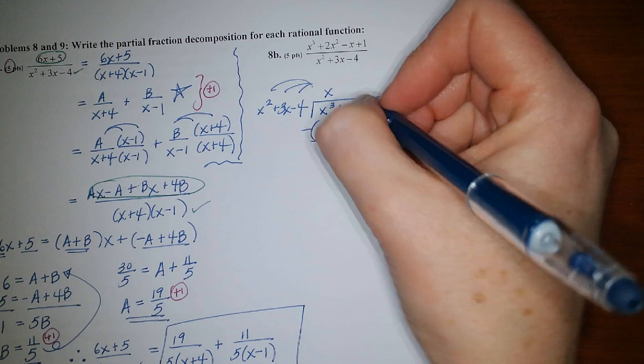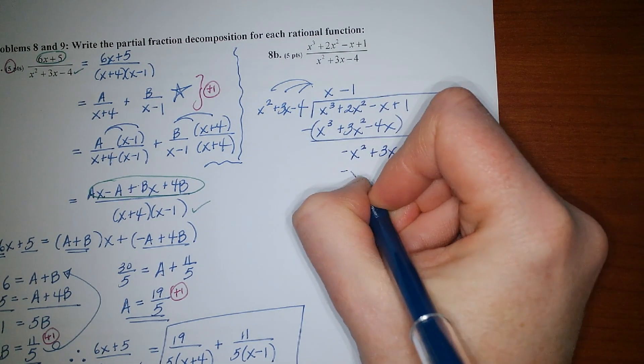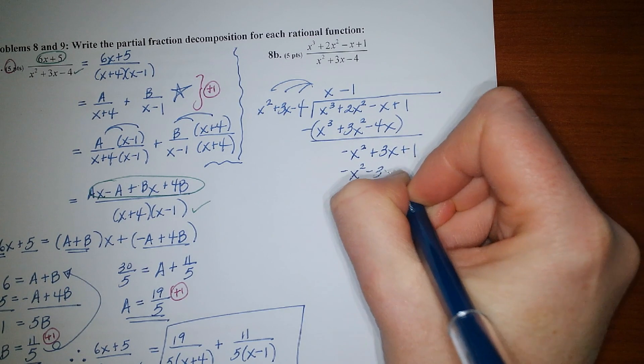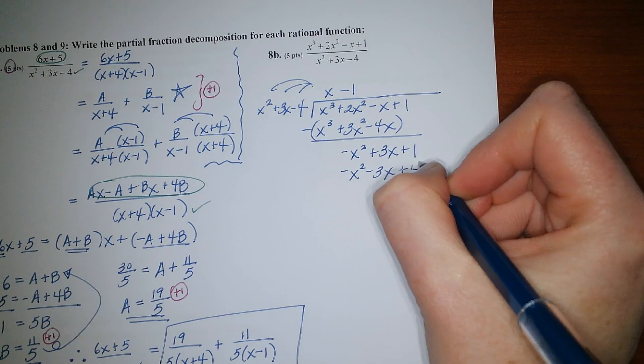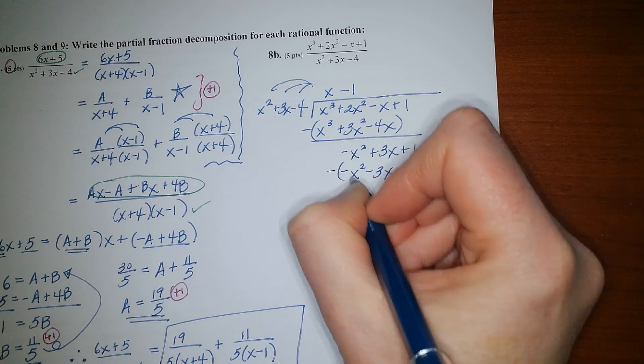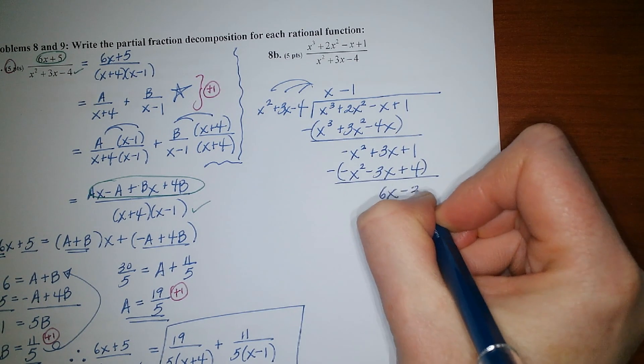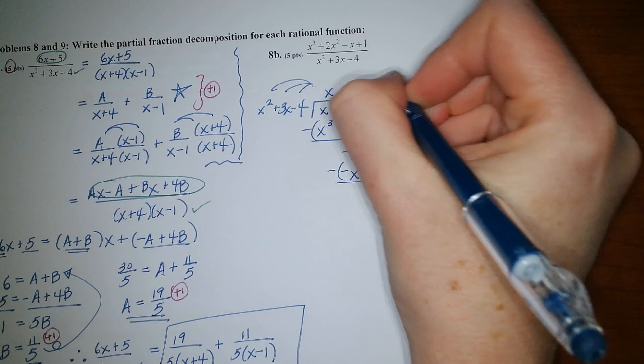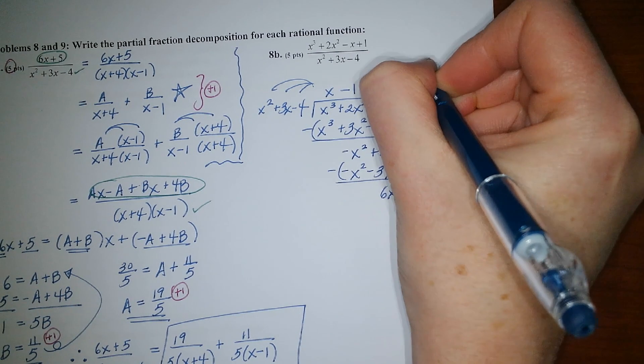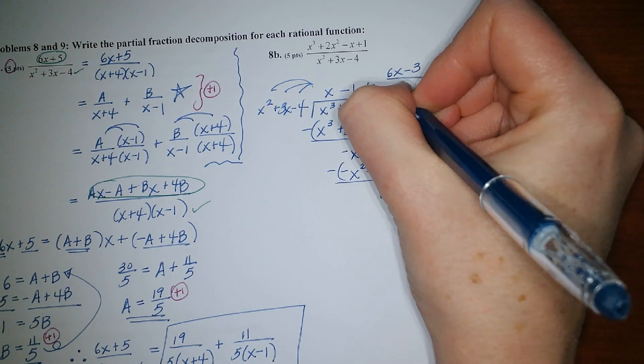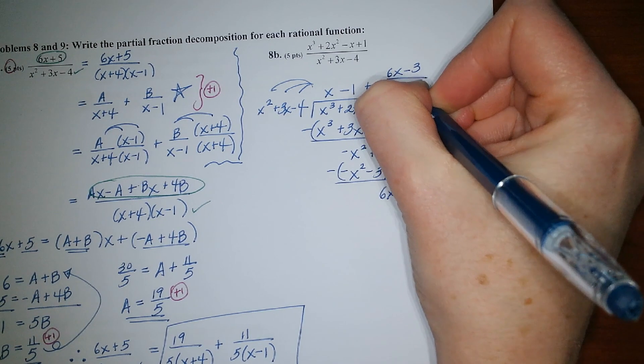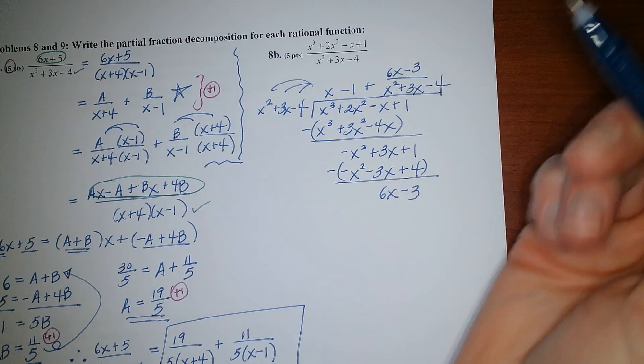I'm going through that round again. So now we'd have negative 1 here. We'd get negative x squared minus 3x plus 4. And then subtracting, we'd end up with 6x minus 3. There we go. Okay.